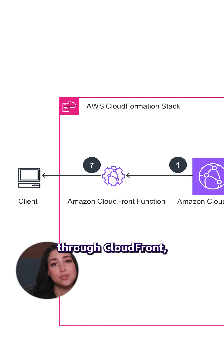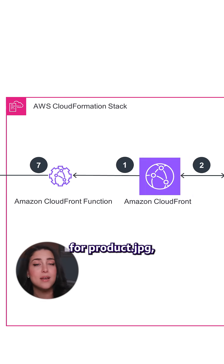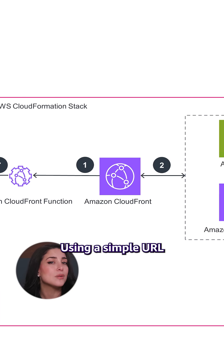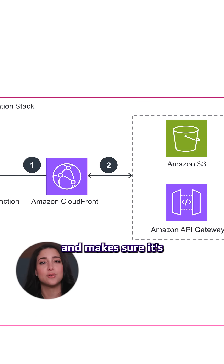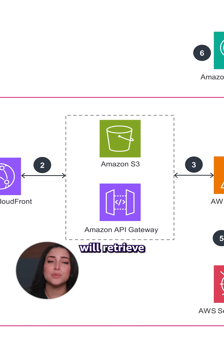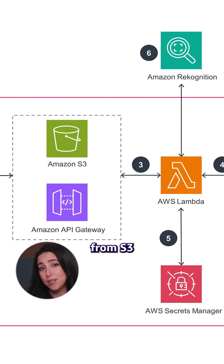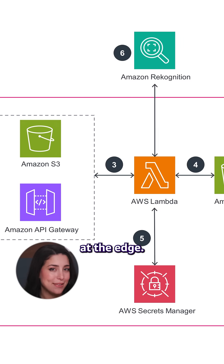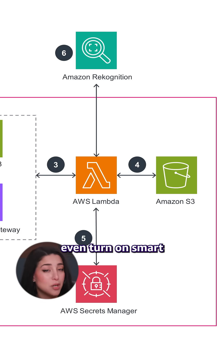With this solution, your application makes a request for an image through CloudFront, but instead of just asking for, say, product.jpg, it asks for something like this using simple URL parameters. A CloudFront function caches this request and makes sure it's formatted correctly. If this exact version hasn't been created before, the solution will retrieve your original image — either through API Gateway or a Lambda function — from S3 and transform it right there at the edge. It can resize it, change the format, whatever you need. You can even turn on smart cropping with Rekognition or add security with signed URLs.